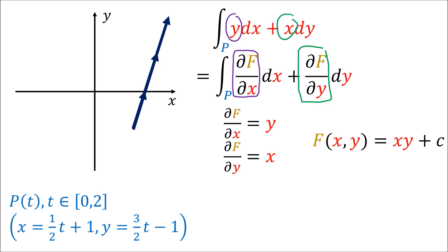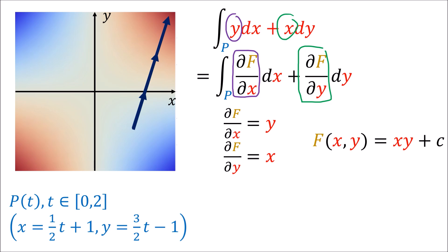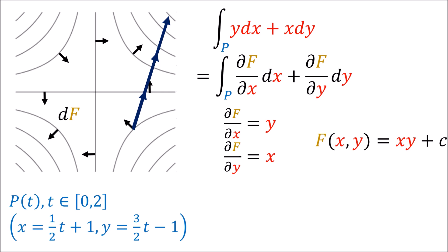We now have our scalar field f, which looks like this — using c equals 0 for simplicity. There are positive scalar values where x and y have the same sign, and negative values where they have opposite signs. The covector field df is obtained by looking at f's level sets, with black arrows pointing in the positive direction. Putting our path here and counting how many contour curves it pierces, we get a total of 5, exactly what we expect.